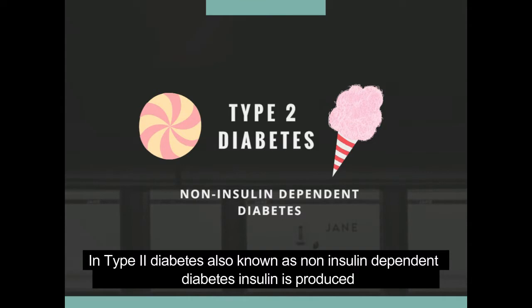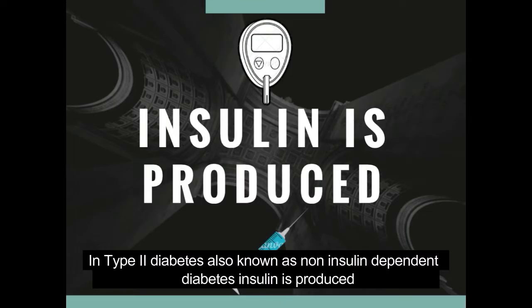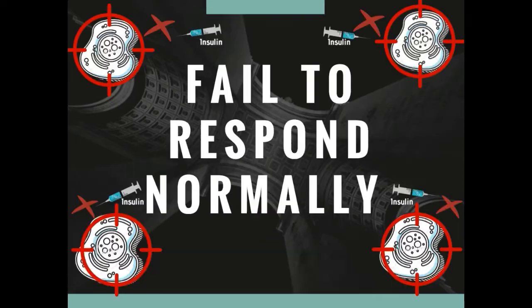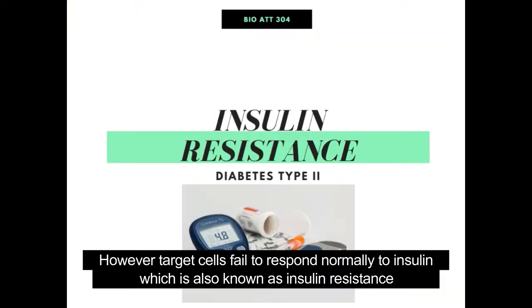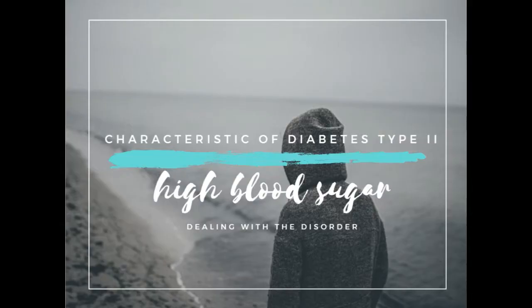In Type 2 diabetes, also known as non-insulin dependent diabetes, insulin is produced. However, target cells fail to respond normally to insulin, which is also known as insulin resistance. As such, this disorder is characterised by high blood sugar.